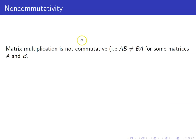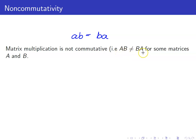One property of real numbers which is not true for matrices is that matrix multiplication is not commutative. For real numbers, we know that the product AB is always equal to BA — the order does not matter. However, for matrices, it is possible that the product AB is not the same as BA.